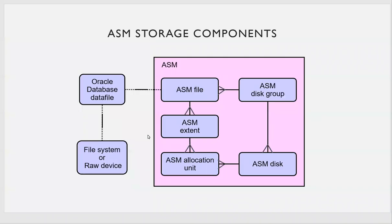We have seen the logical architecture and the physical architecture of the database. In logical structure, it starts with database blocks, then extents, segments, tablespace, and finally forms the database. In physical structure, it's the physical data files that are mapped to the database — that is the physical structure. And the logical structure maps on top of that.